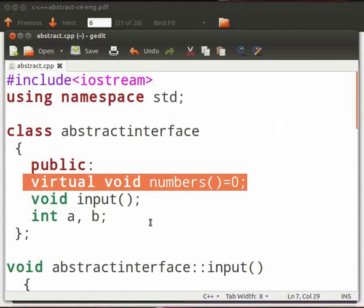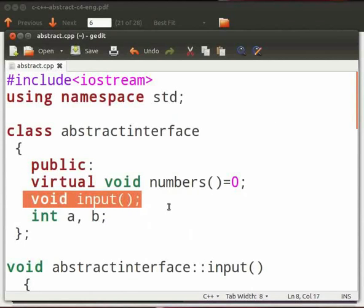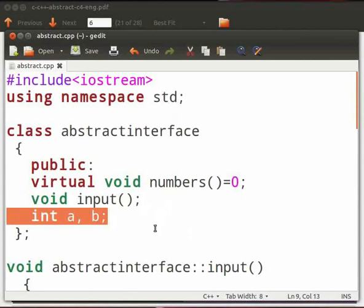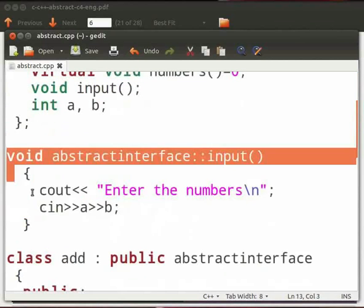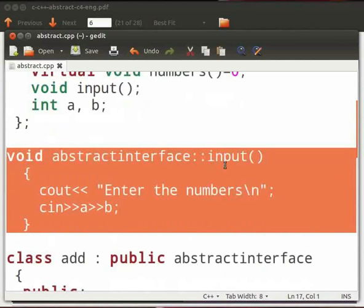In this we have declared a virtual function named numbers. It is initialized to zero. Then we have a non-virtual function and two integer variables as a and b. Here we access the input function. In this we accept the numbers a and b.